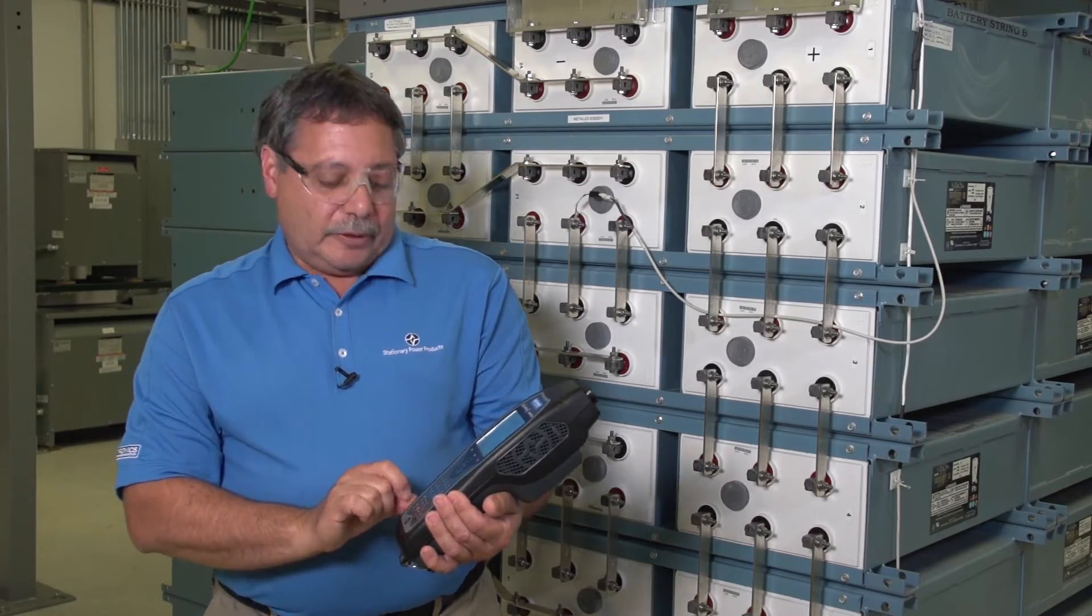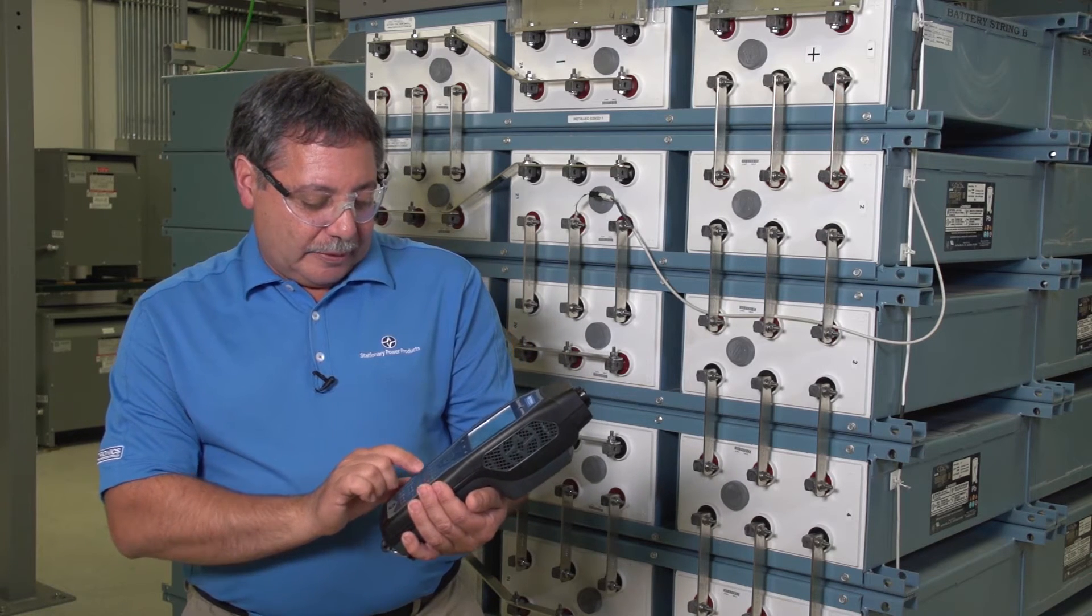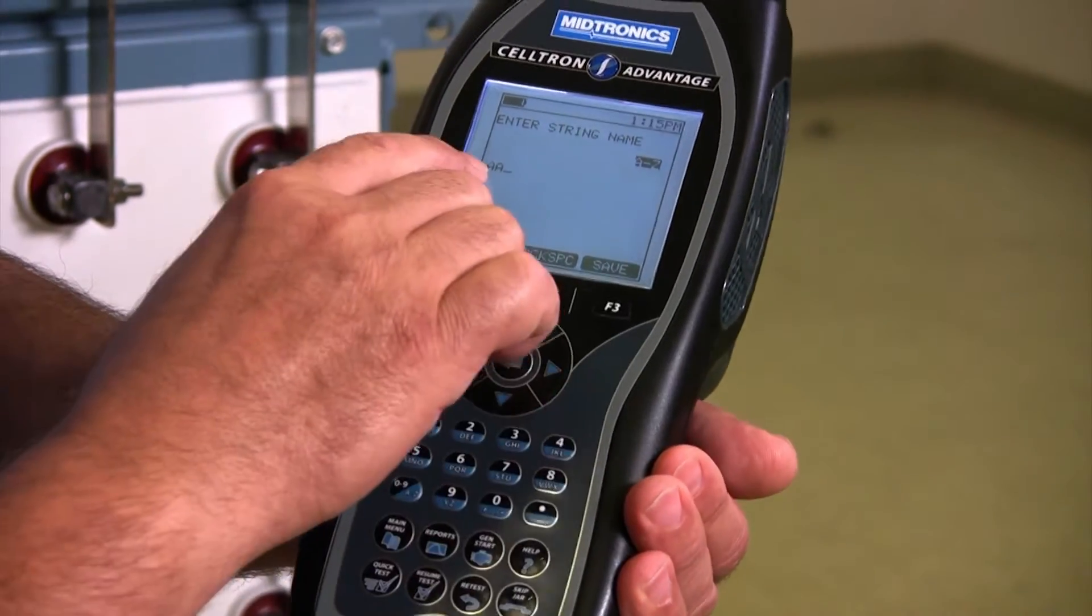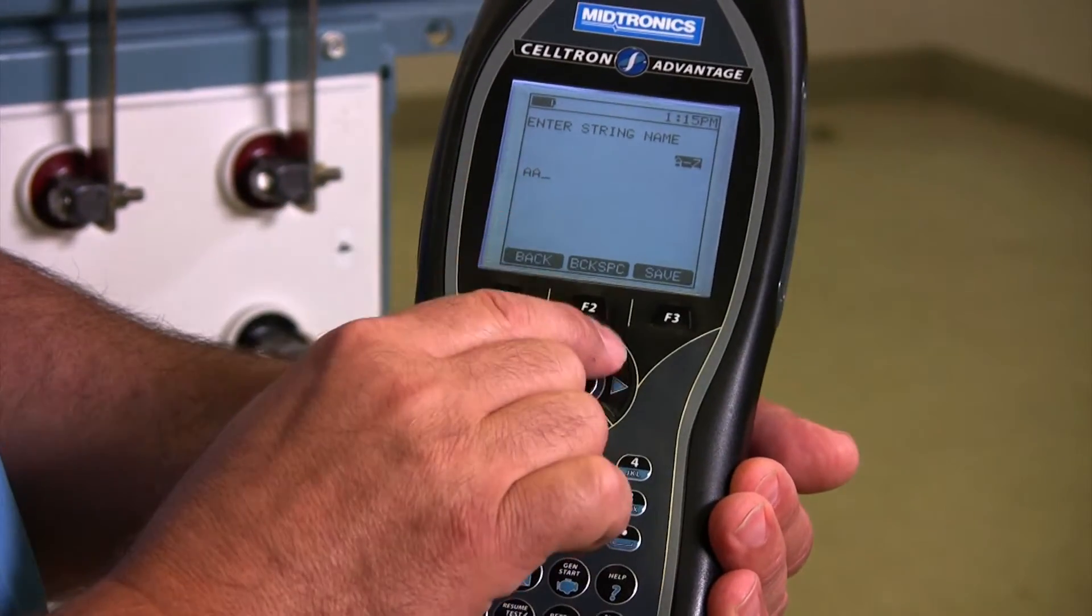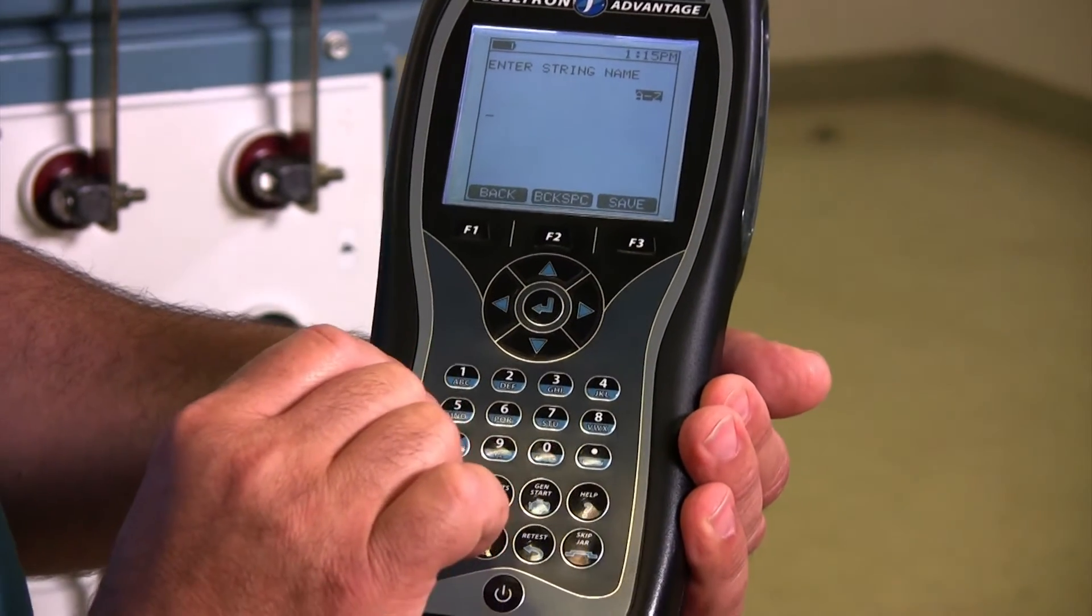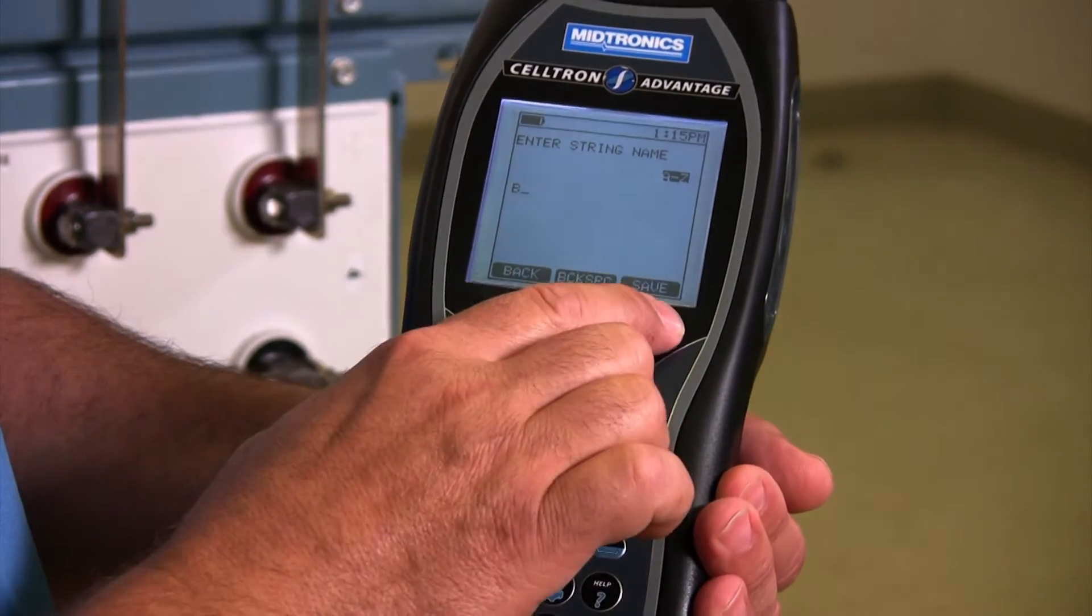And now we want a string name. We're going to call this string B, so I'm going to go here. And I made a mistake, I didn't do it quick enough, I had two A's. So I could just backspace to clear that. And now I'm going to go for B. So now that's string B. I save it.